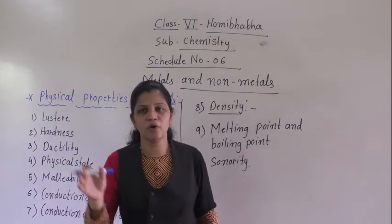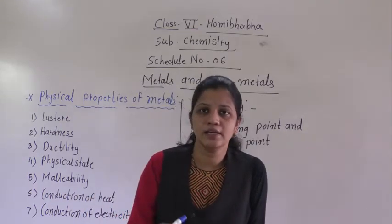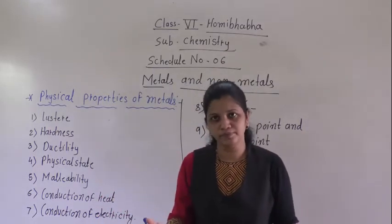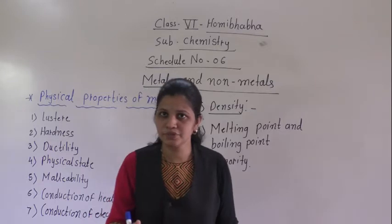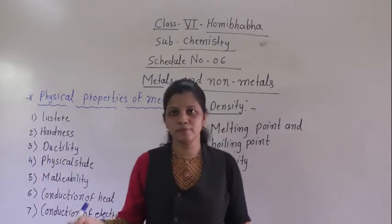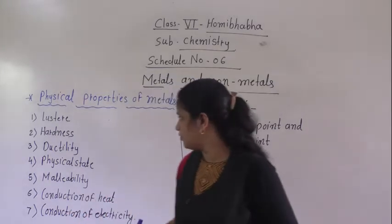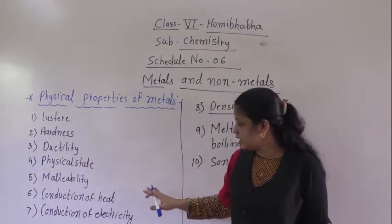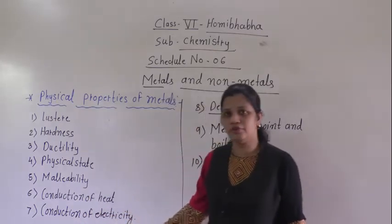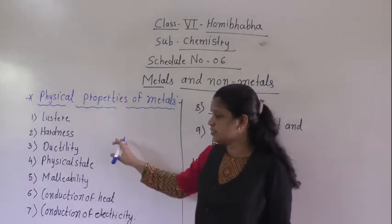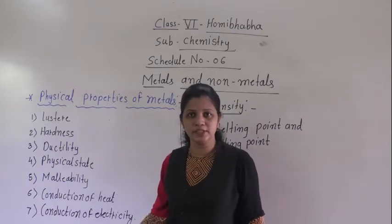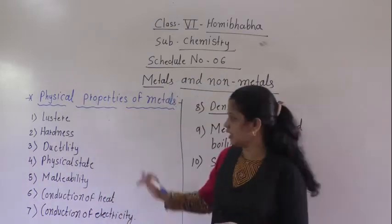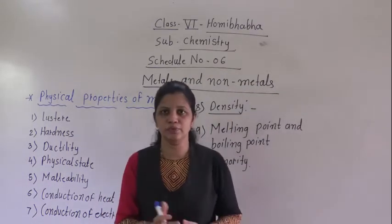Then hardness — mostly metals are hard, with some exceptions. For example, sodium is a metal but it is exceptional because it is a soft metal that we can easily cut with a knife. Then we have ductility, physical state, mallability, conduction of heat, and conduction of electricity. These are the 7 physical properties we have learnt before. If you have any doubt regarding these properties, please ask me.